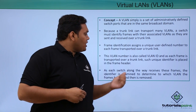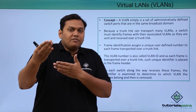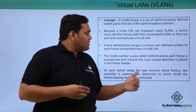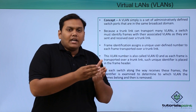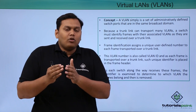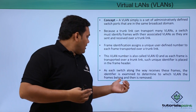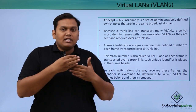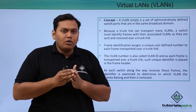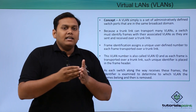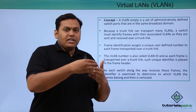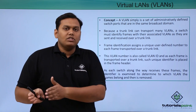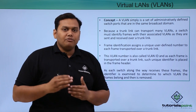When a switch receives frames over a trunk link, it identifies, examines, and determines which VLAN those frames belong to, then removes any frame that does not belong to the destination VLAN. If a frame is not supposed to travel through a particular VLAN, the switch examines and determines this, then removes the frame from passing through that VLAN.